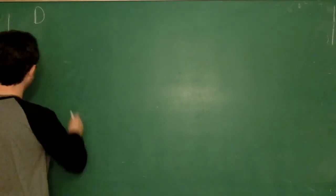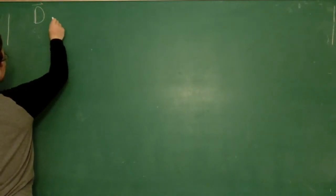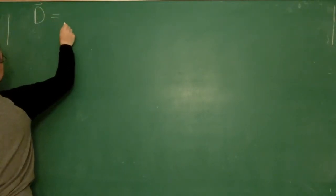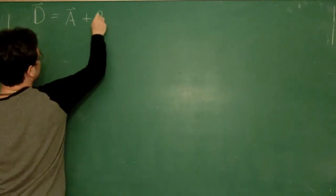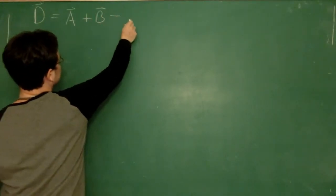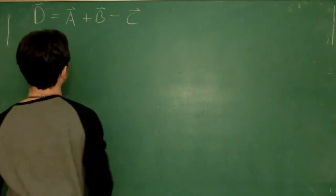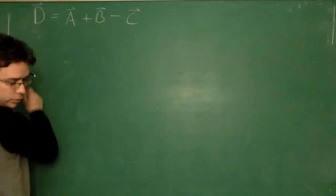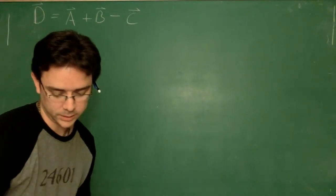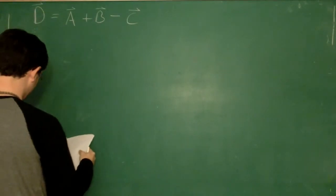So I'm going to define a vector D. I think I've got that in range. So it's a vector D, and I'm going to say that it is equal to vector A plus vector B minus vector C. And so now I'm going to give you vectors A, B, and C, and we're going to see if we can evaluate this.